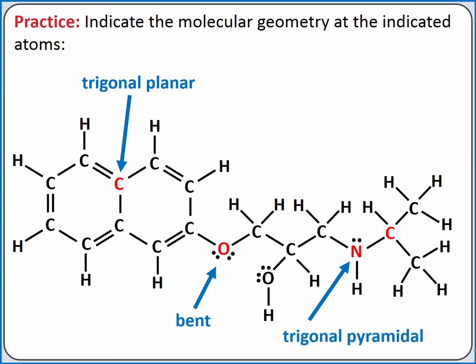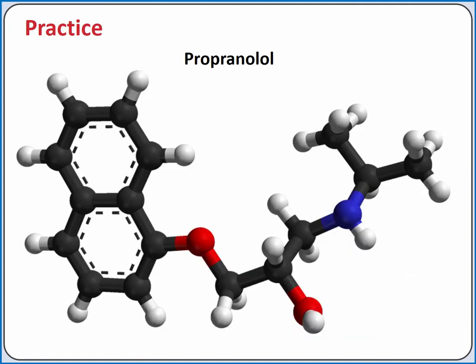The nitrogen atom has a trigonal pyramidal molecular geometry. And for the carbon on the right, it has four bonding groups and no lone pairs, so it has a tetrahedral molecular geometry. Determining the molecular geometry at each of the interior atoms allows us to piece together the overall structure of the molecule propranolol.